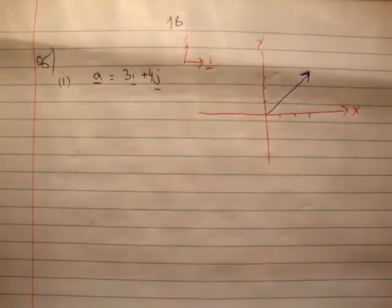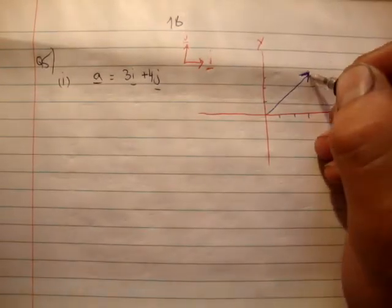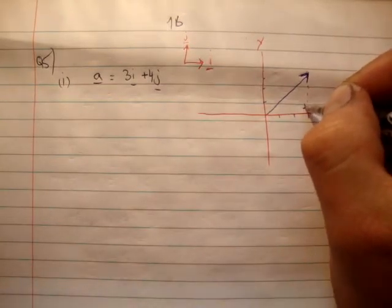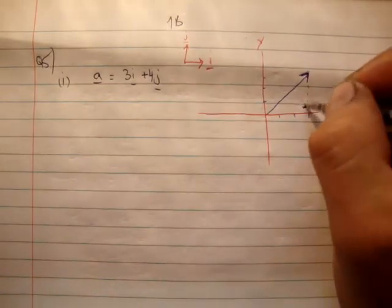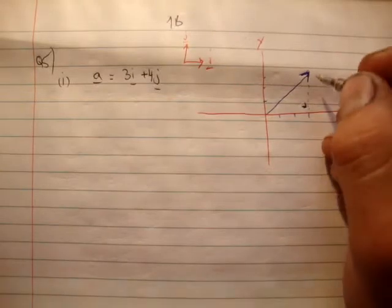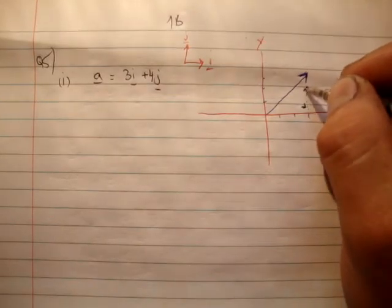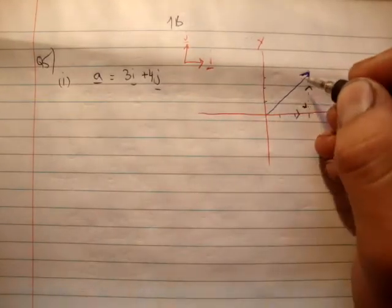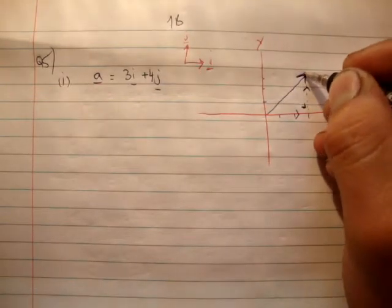Now we've got to drop our perpendiculars. What you should realize is that dropping perpendiculars is actually the same as finding the component vectors of this resultant. So this vector here a is a resultant vector, it's made up of other vectors.